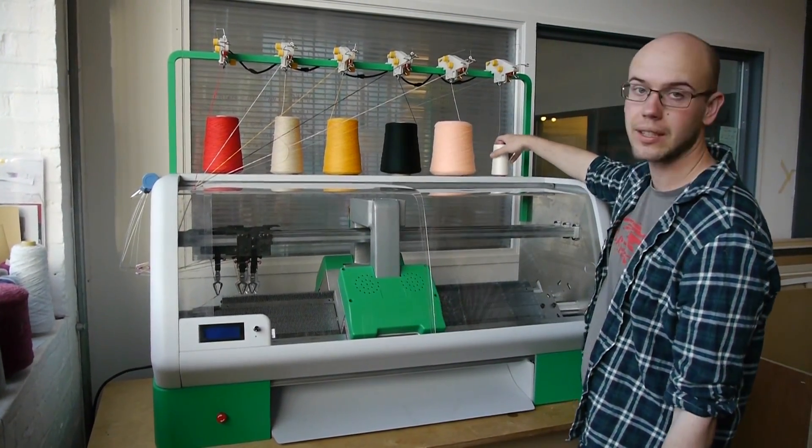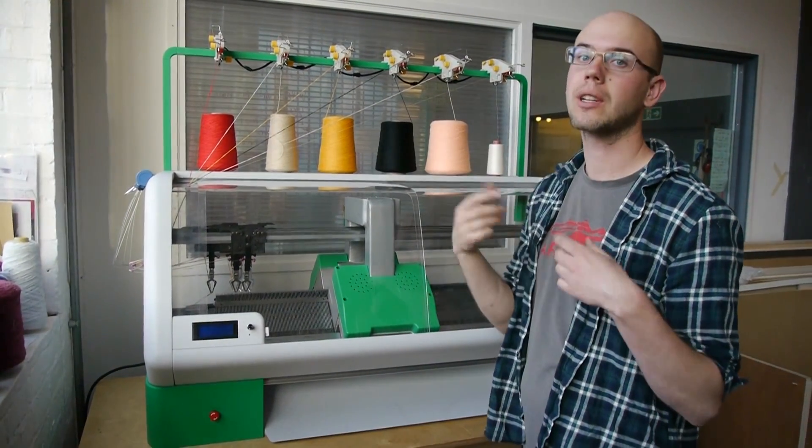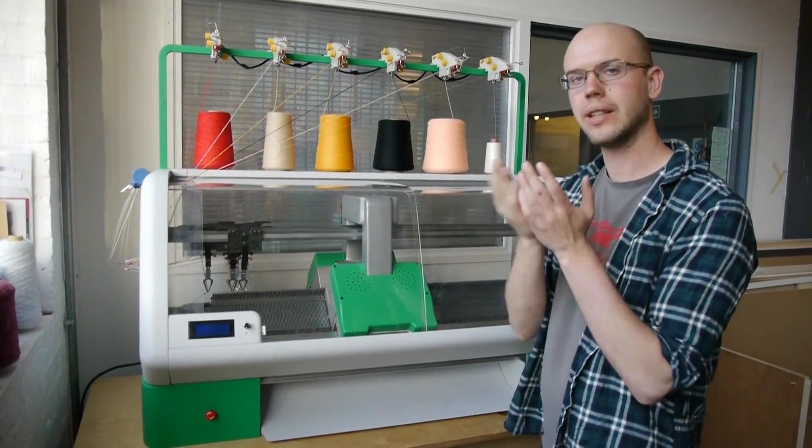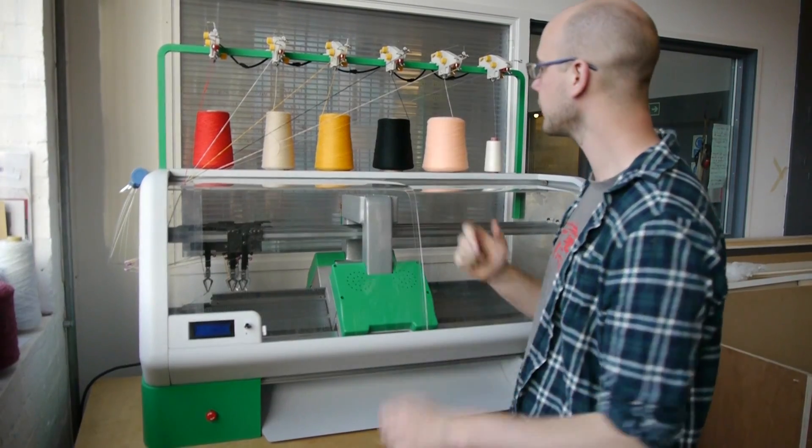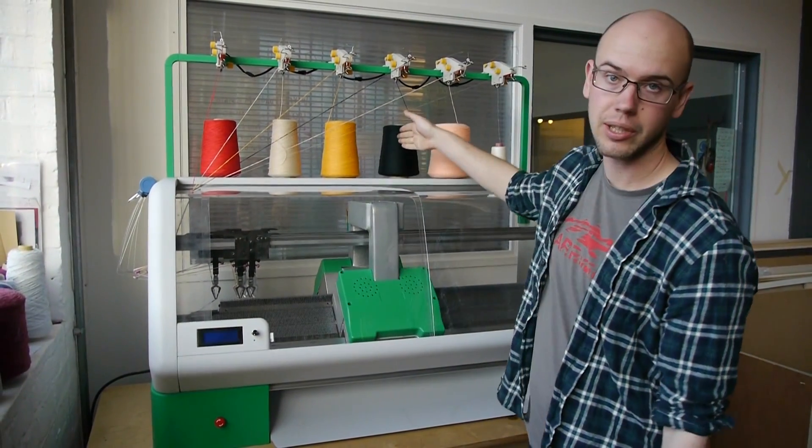This is the draw thread, which is going to let me separate the waste yarn from the garment at the end. So you just pull it out, and then the two come apart easily.